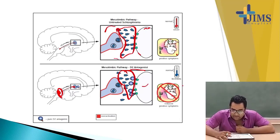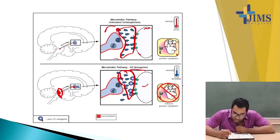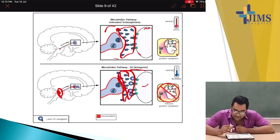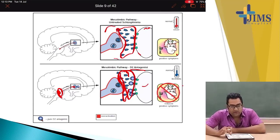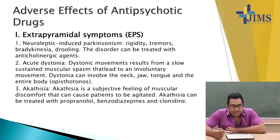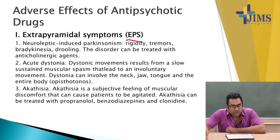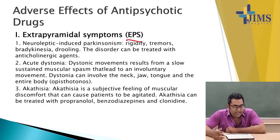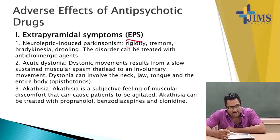EPS or extrapyramidal symptoms are very common with antipsychotics. There are three main types: neuroleptic-induced Parkinsonism, acute dystonia, and akathisia. In Parkinson's symptoms there will be rigidity, tremors, bradykinesia, and drooling. This disorder can be treated with anticholinergic agents. In acute dystonia, there are dystonic movements resulting from sustained muscular spasm that lead to involuntary movement, which can involve the neck, jaw, tongue, and the entire body.